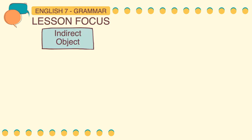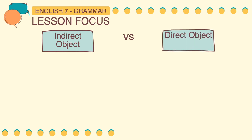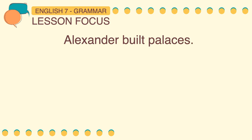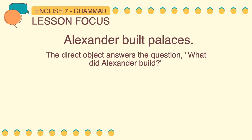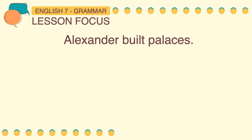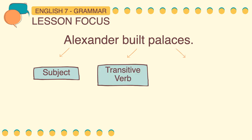What's the difference between indirect object and direct object? The indirect object answers the questions to whom, for whom, and for what in the sentence, while the direct object answers the questions who, whom, and what. For example: Alexander built palaces. The direct object answers the question: what did Alexander build? Therefore, palaces is the direct object. The subject is Alexander, the transitive verb is built, and the direct object is palaces.